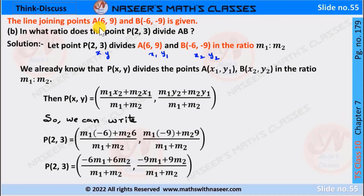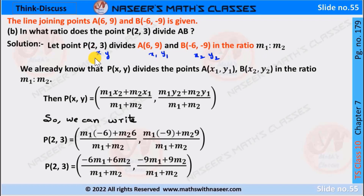The line joining points A(6,9) and B(-6,-9) is given. In what ratio does the point P(2,3) divide AB? Let point P(2,3) divide A(6,9) and B(-6,-9) in the ratio M1 is to M2. Let coordinates of point P be X=2 and Y=3, and point A coordinates as X1=6, Y1=9, and X2=-6, Y2=-9.